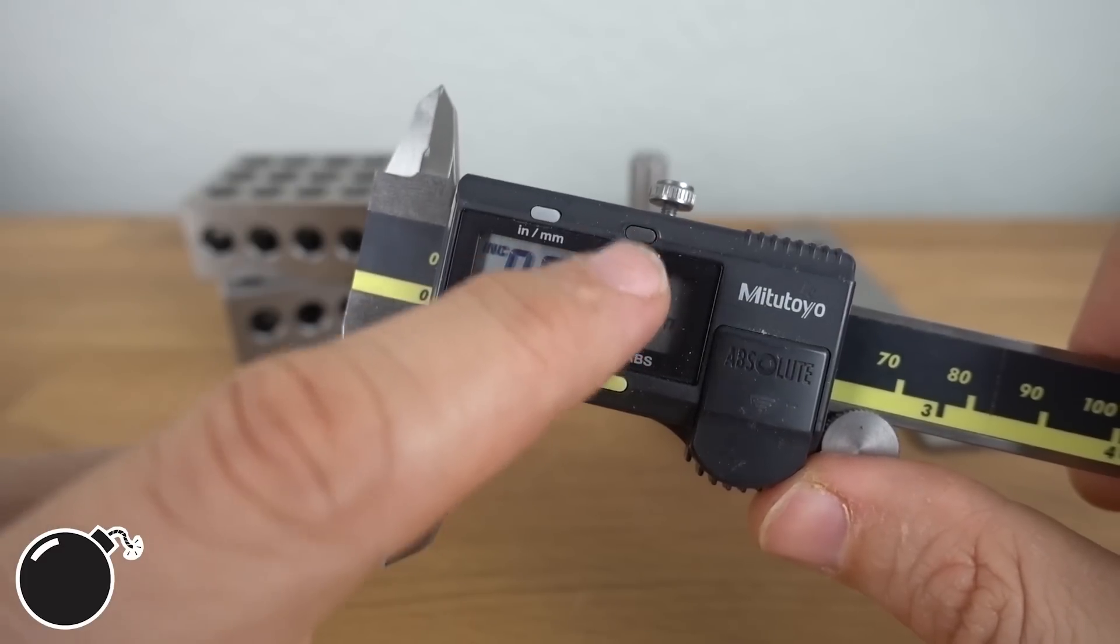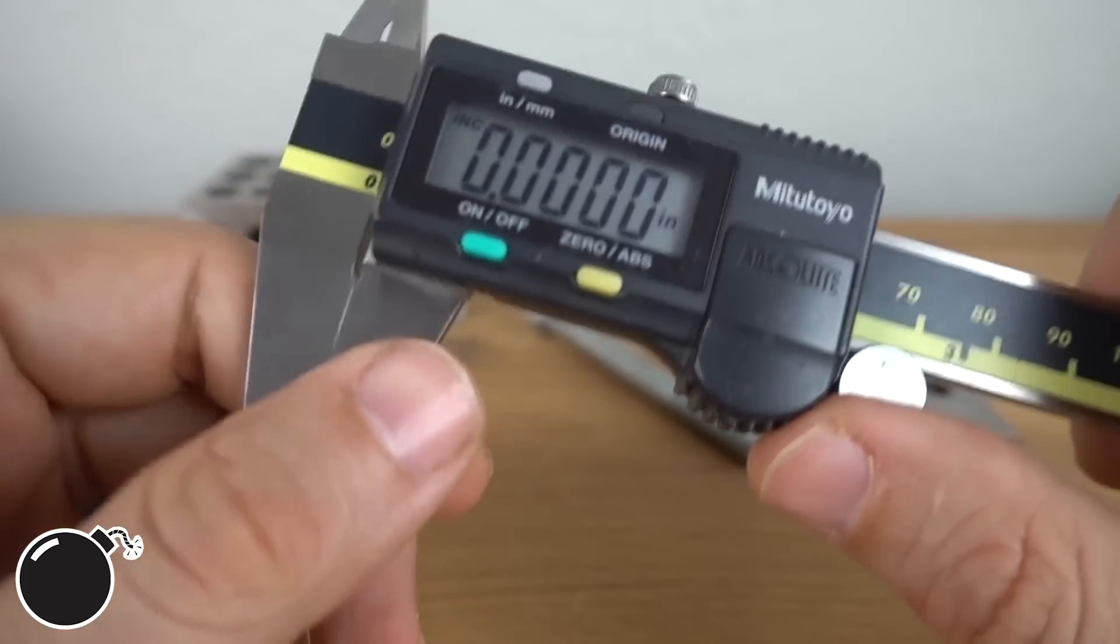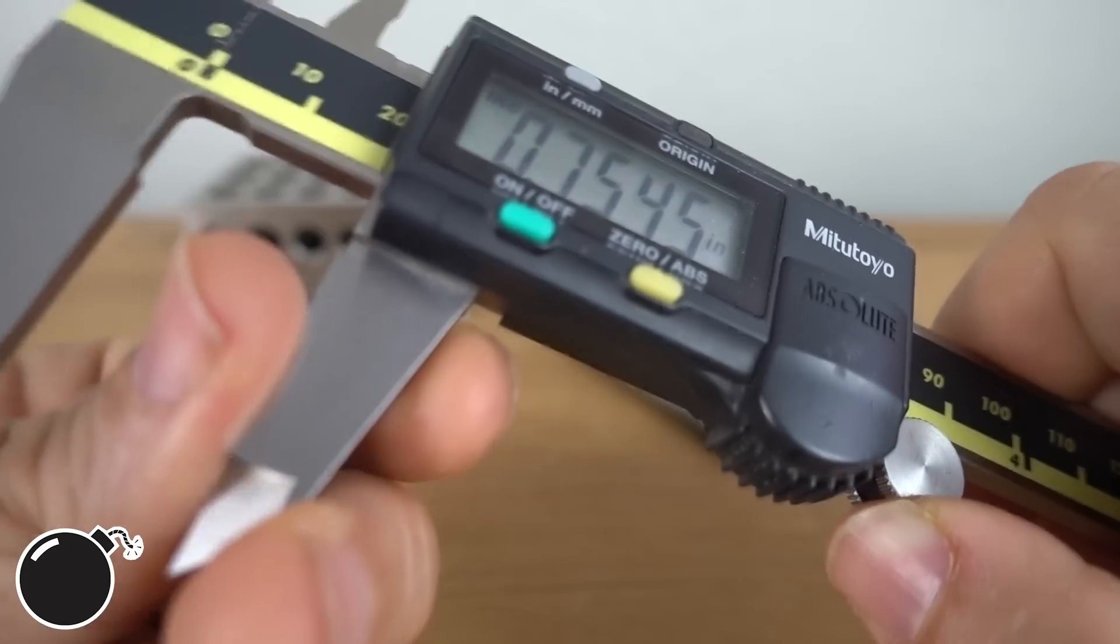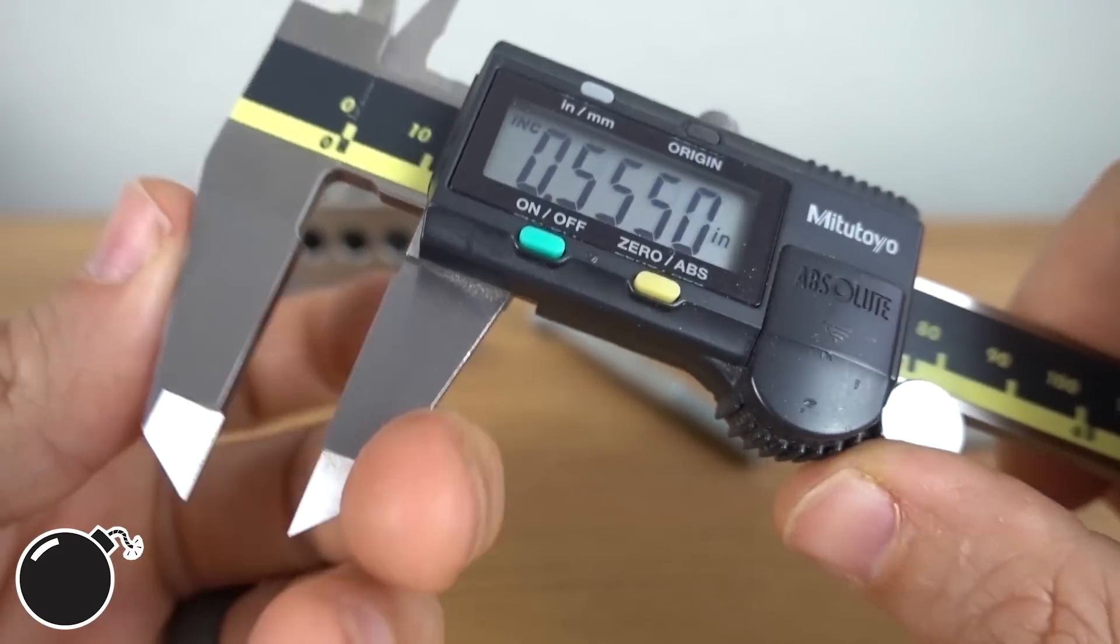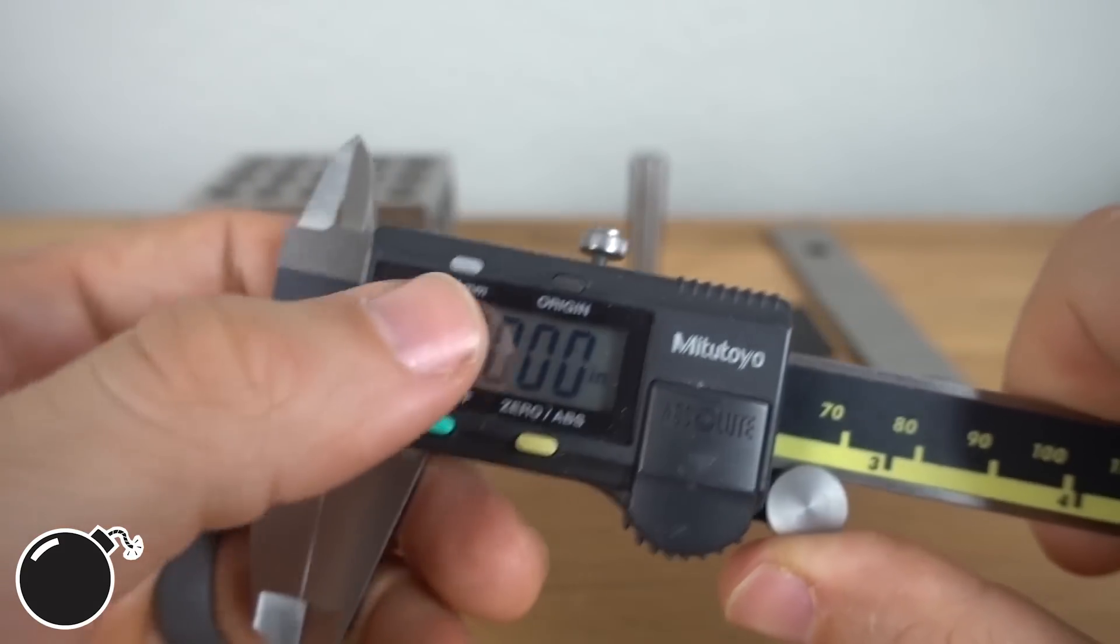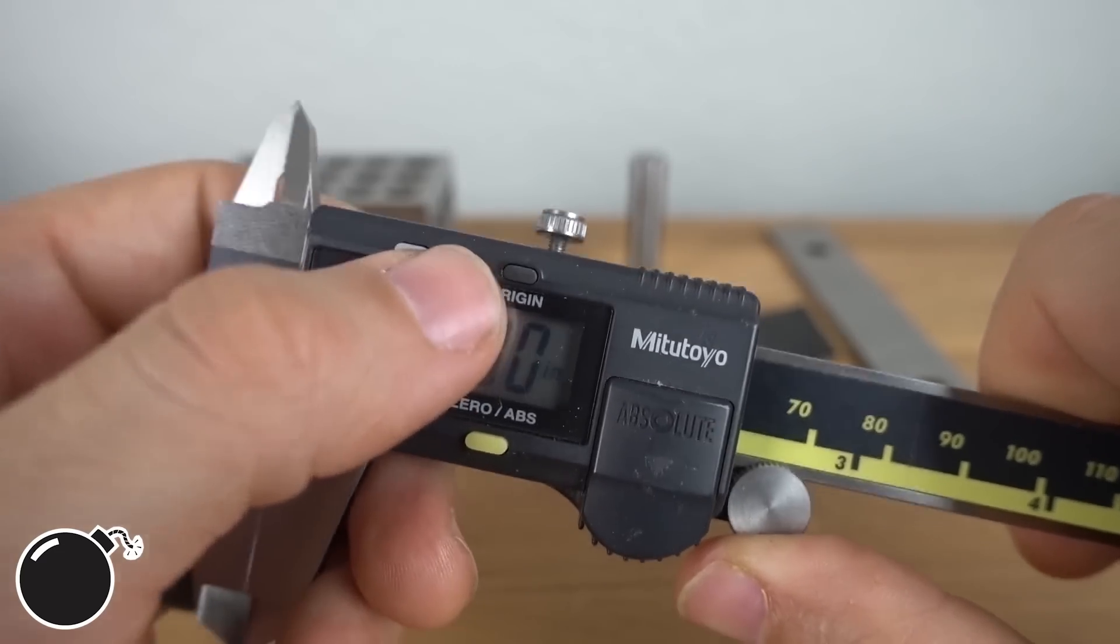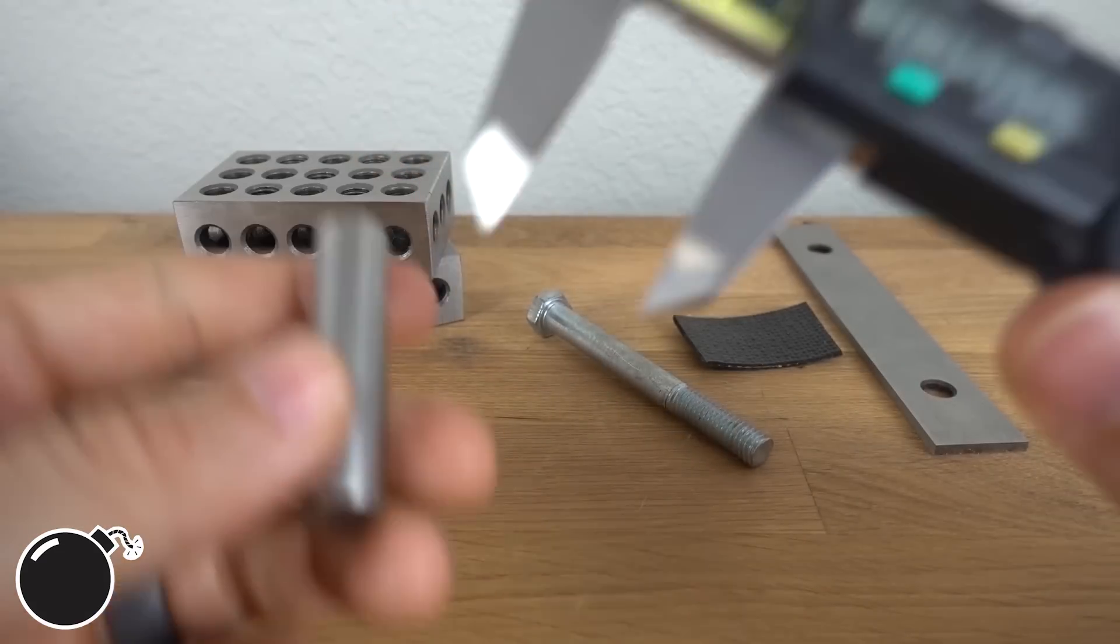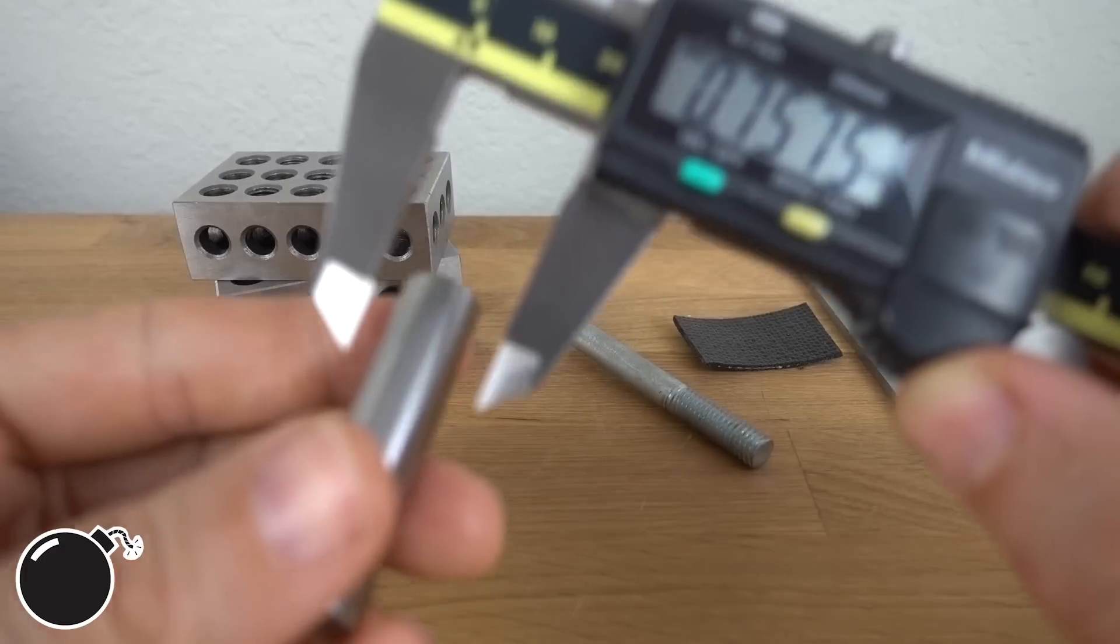The origin button is used to recalibrate the calipers. You should re-zero them every time you pick them up. Always clean the jaws first. Fingers work pretty well, but a cloth is better, and then close them and see what they're reading. If it isn't zero, hold down the origin button until it's reading zero, and then if you can, it's not a bad idea to check them on a part of known size, like a gauge pin to make sure they're good.